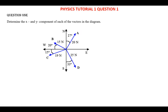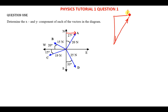I'll start with vector A. To find the x component of A — let me draw it — this here is the x component of A. So we have a triangle like this. The angle has been given as 27 degrees. This is vector A, and we need to find ax, the x component of A.